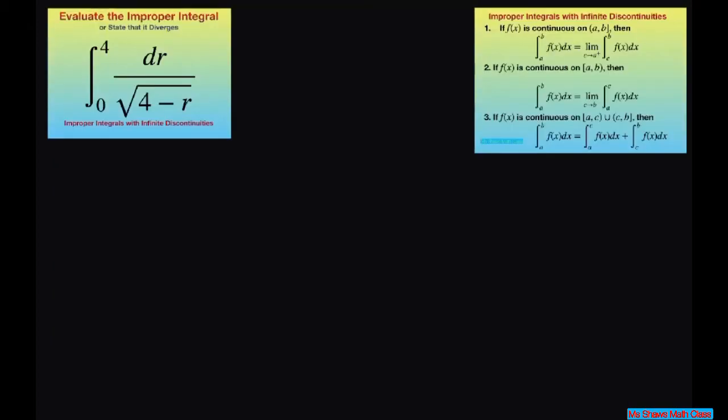Now we have an infinite discontinuity at 4 because if you substitute in 4 here we get an undefined function. So our interval, f is continuous on 0 to 4 with the infinite discontinuity at the endpoint r equals 4.